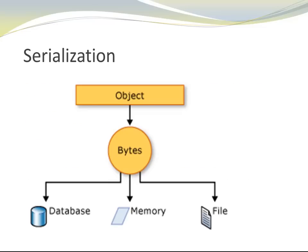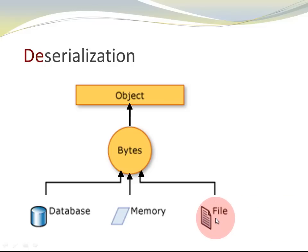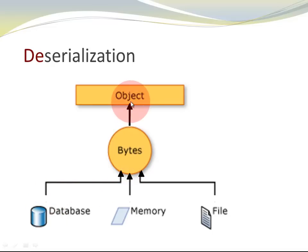Let's look at this image here. We have an object, and we are converting the object to a stream of bytes. Once we have a stream of bytes, we can store that, for example, in a database, in memory, or on file. Deserialization is the opposite process — I take the data stored in a file or a database, read it as a sequence of bytes, and reconstruct the object based on that sequence of bytes.